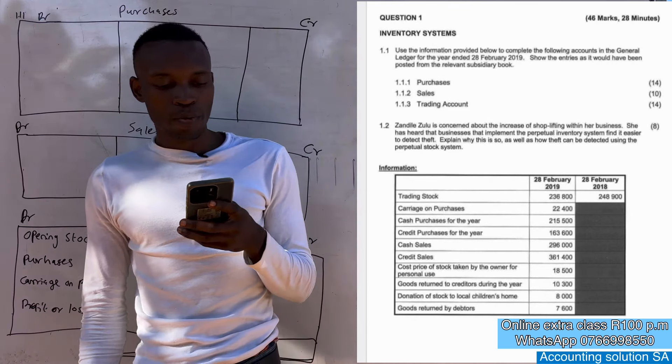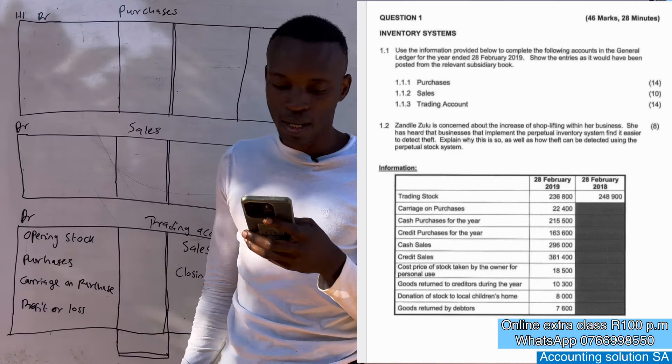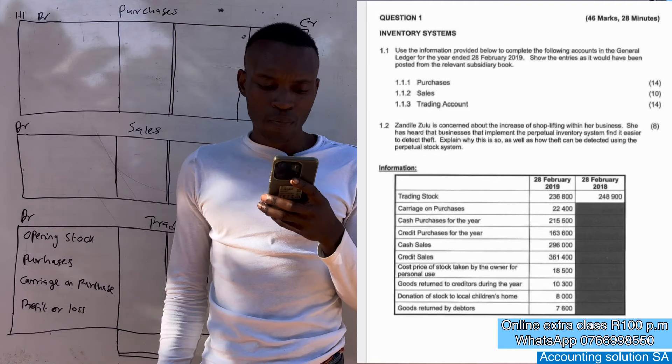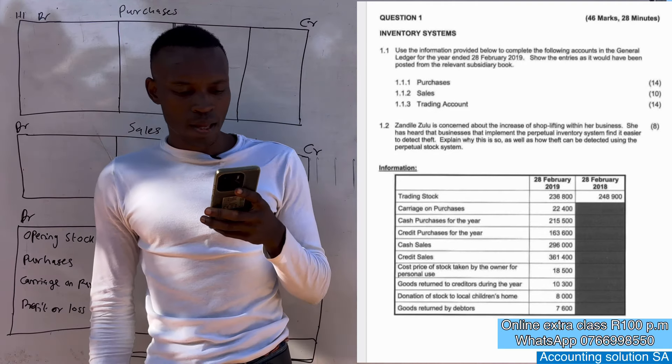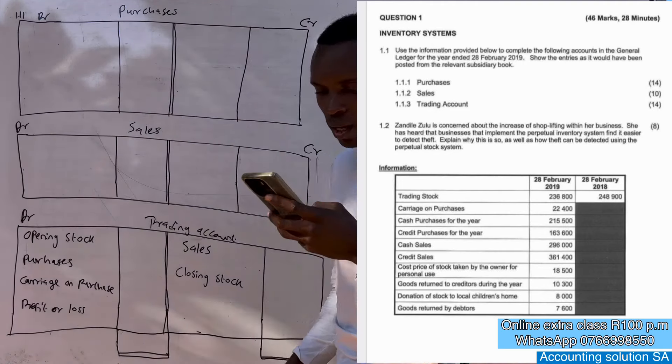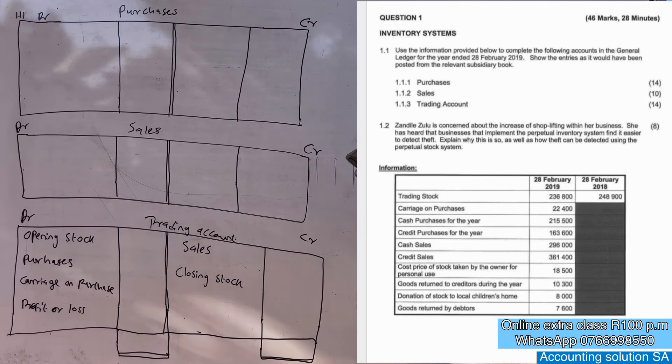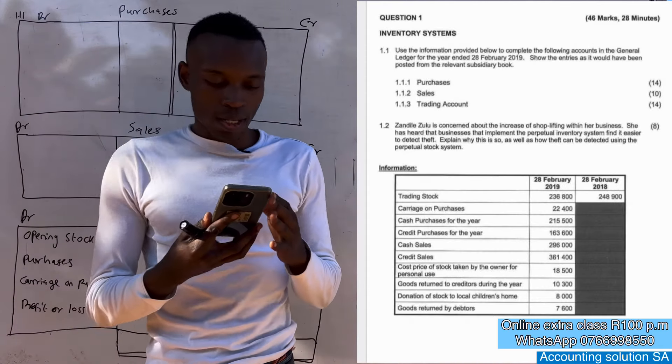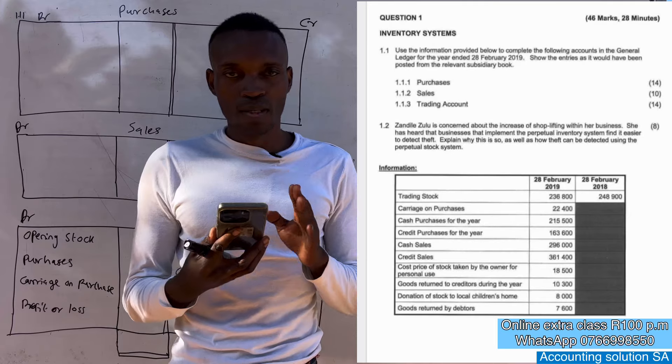Number 1.1 purchase, sales and trading account. Zandi Lazulu is concerned about the increase of shoplifting when her business has heard that businesses that implemented the perpetual inventory system find it easy to detect theft. Explain why this is so important as well as how the theft can be detected using a perpetual stock system. Okay, let's leave that one for now and do the first one.